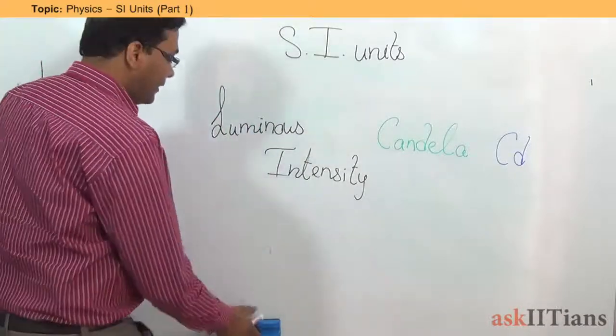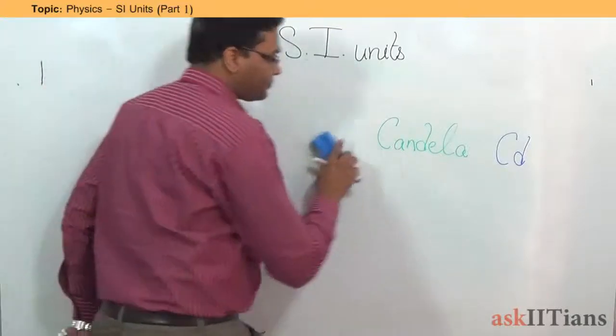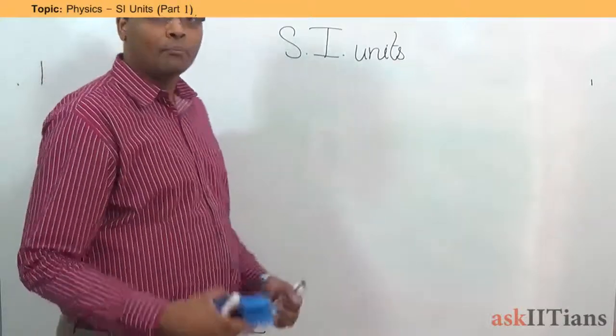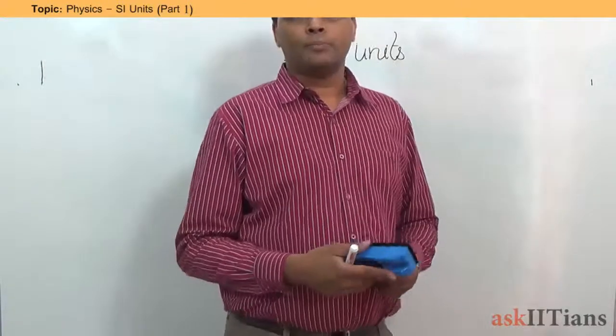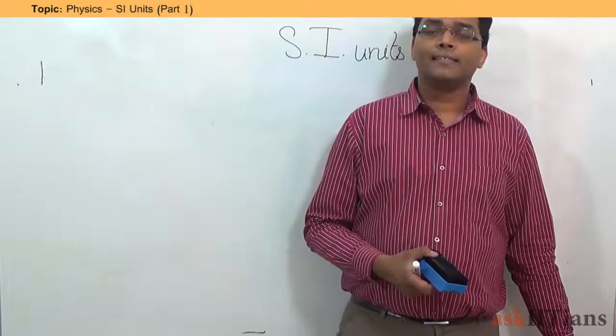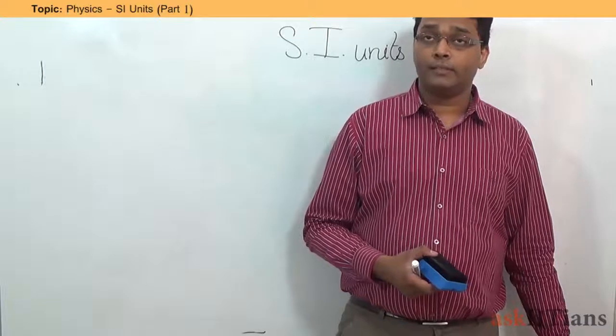Now, let's go further and try to understand about what are the derived units. Whichever units we have mentioned, I have put it on the board stating that these are all the derived units. So, if I say that these are all the derived units, then how do we get to those derived units?